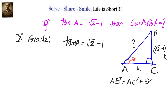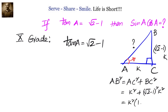Now by Pythagoras theorem, we know that AB square equals AC square plus BC square. Let's substitute the values: AC square is k square and BC square is root 2 minus 1 whole squared into k square. Taking k square common and expanding, you get k square into 1 plus 2 plus 1 minus 2 root 2, which is nothing but k square into 4 minus 2 root 2.